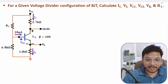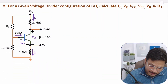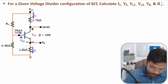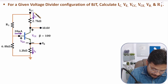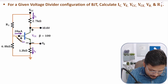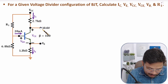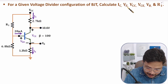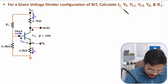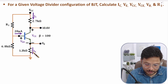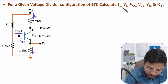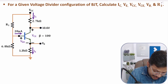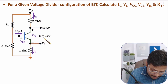Now let me explain the second problem. This problem is quite interesting. Here we are not given VCC, we are not given IC. We are given base current IB, collector voltage VC, and emitter voltage is needed. There are many parameters to find. First of all, we need to find IC.